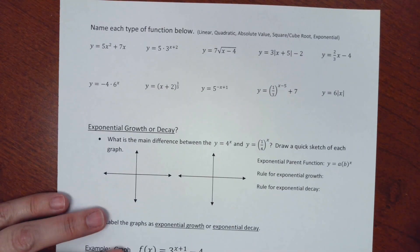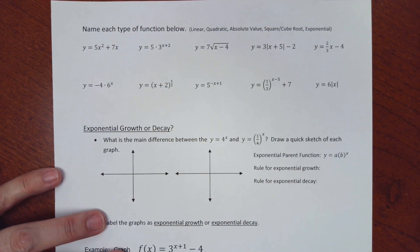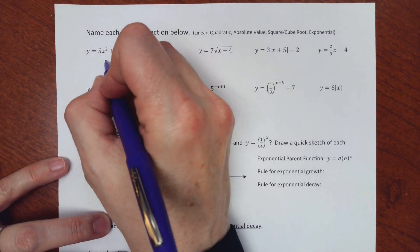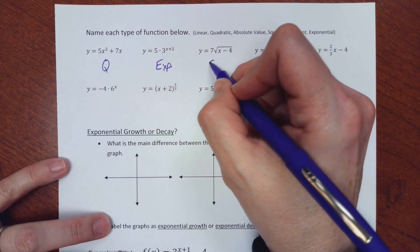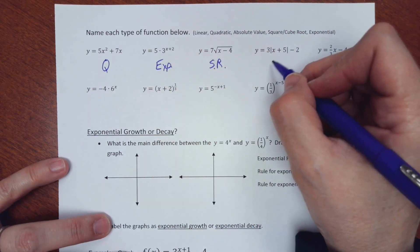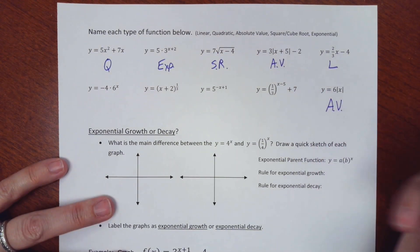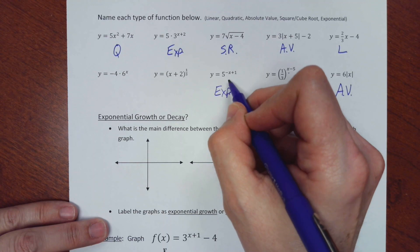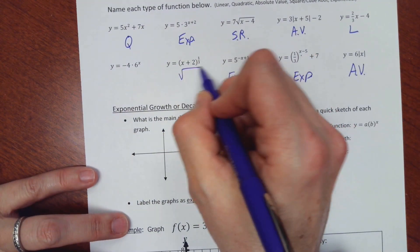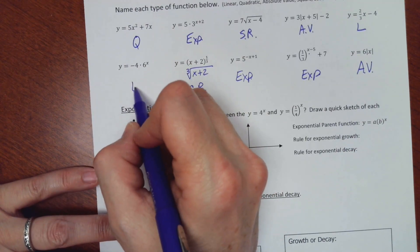Let's look at this paper and name these functions. Hopefully you put quadratic here. This one was our exponential. This one was a square root. This was absolute value. This one was linear. Here's another absolute value. This was an exponential — x in the exponent. Another exponential. This one — remember that means cube root. And this one? Exponential.